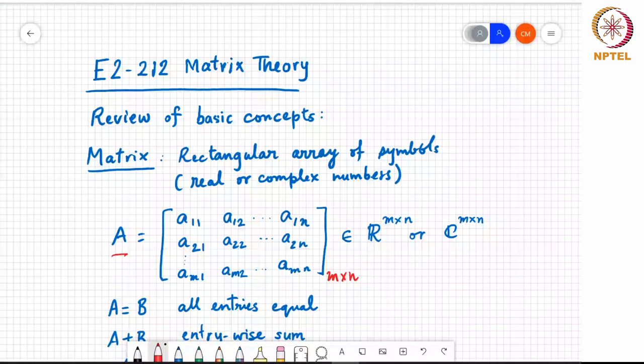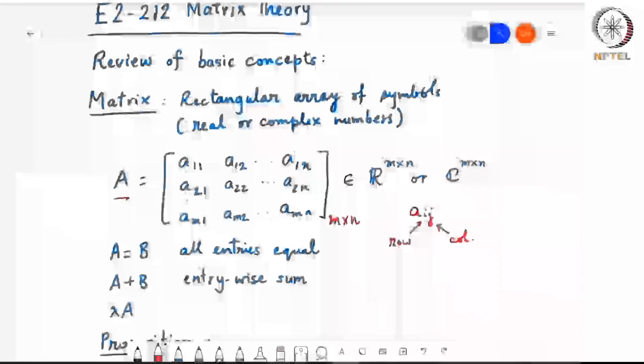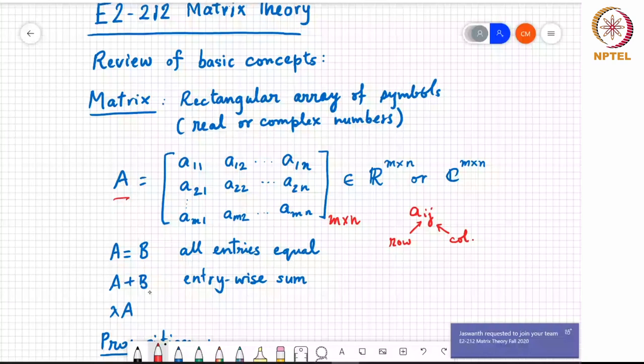And we write that this is in the space real to the power M cross N or complex to the power M cross N, if depending on whether these AIJs are real valued or complex valued. So always when we write, the I is going to represent the row index and J is going to represent the column index. Now we say A equals B if all entry-wise, all the entries of the two matrices match. So all the entries should be equal. When you do A plus B, you can only do it if the two matrices are of the same size and it's an entry-wise sum of the two matrices. Lambda is a scalar here. It could be a real or complex number. Lambda times A corresponds to multiplying every entry of A with this value lambda.